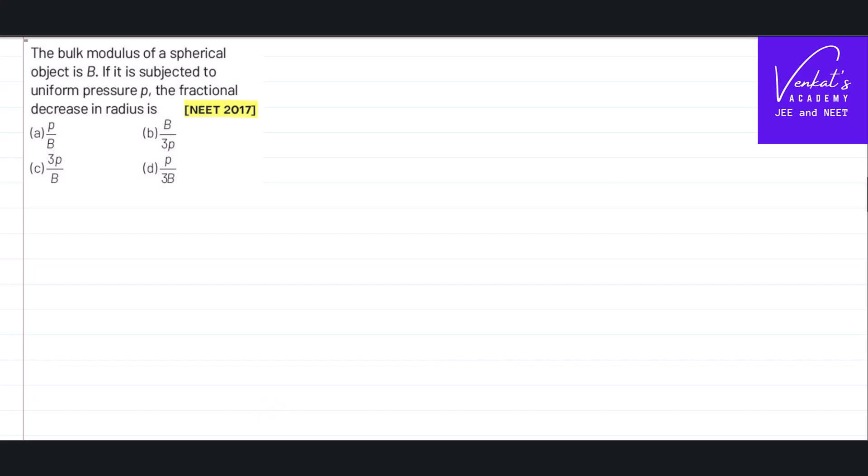This is the NEET 2017 question in mechanical properties of solids. The question is: the bulk modulus of a spherical object is B, it is subjected to a uniform pressure P, what is the fractional decrease in its radius?